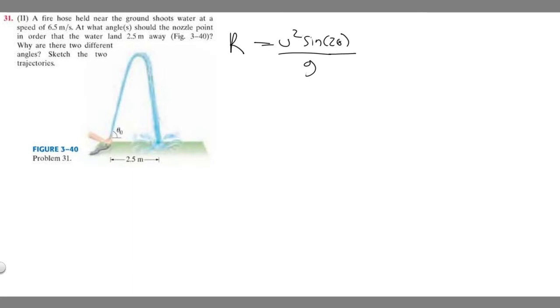And so u is going to be your velocity, the velocity at an angle. R is going to be your range or your change in x. So in this case, it's 2.5. And then g is going to be gravity. And so we're trying to solve for theta, that's going to be the angle.